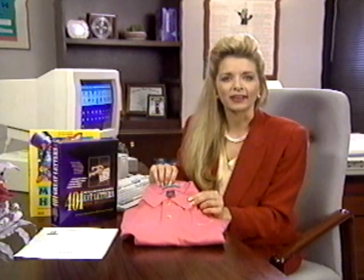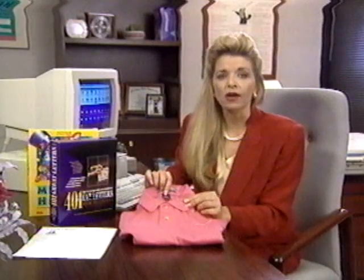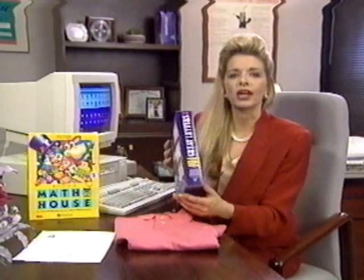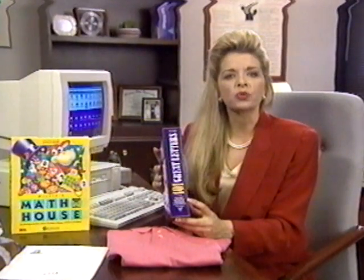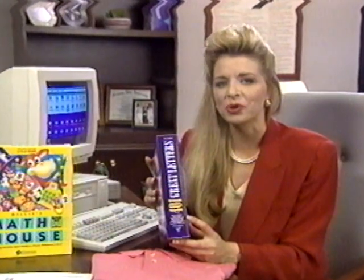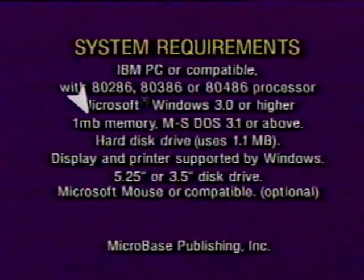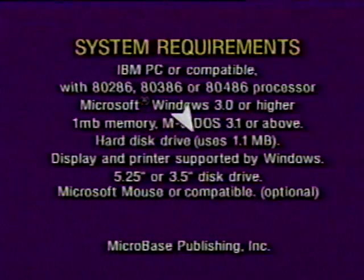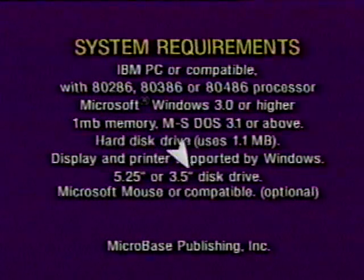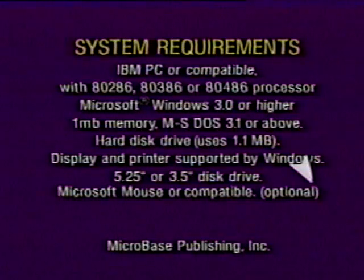Buy some clothes and there's a tag with a size on the inside — it tells you whether it fits. On computer software boxes there's an area that usually says 'requirements.' That's like sizes on clothing. It tells you whether the software will work on your computer. Starting at the top, you need an IBM PC or compatible — a 286, 386, or 486 computer with Microsoft Windows. Your computer should have at least one megabyte of RAM, running DOS 3.1 or above. It should also have a hard disk, and one floppy disk drive — either five and a quarter inch or three and a half inch. A Microsoft mouse is optional, meaning you don't need one but it makes the program easier to use.